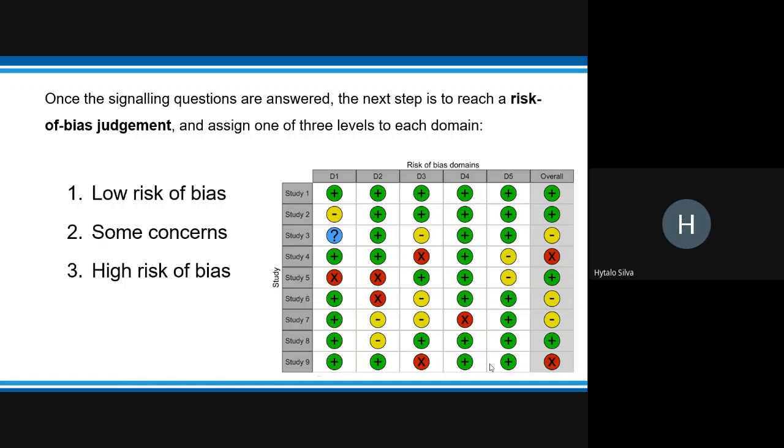Once the signaling questions are answered, the next step is risk of bias judgment and assigning one of three levels to the domain: low risk of bias, some concerns, or high risk of bias.